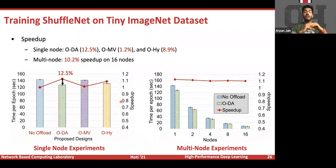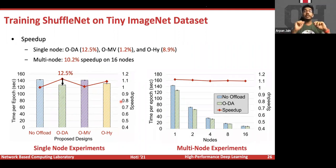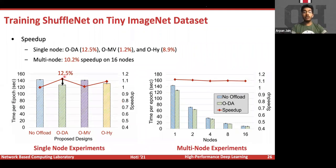For ShuffleNet on the Tiny ImageNet dataset, the images are larger — 32×32 pixels for CIFAR versus larger for ImageNet — so data augmentation time increases. Offloading only data augmentation gave the best performance, equivalent to 12.5 percent speedup on a single node and 10.2 percent speedup on 16 nodes.